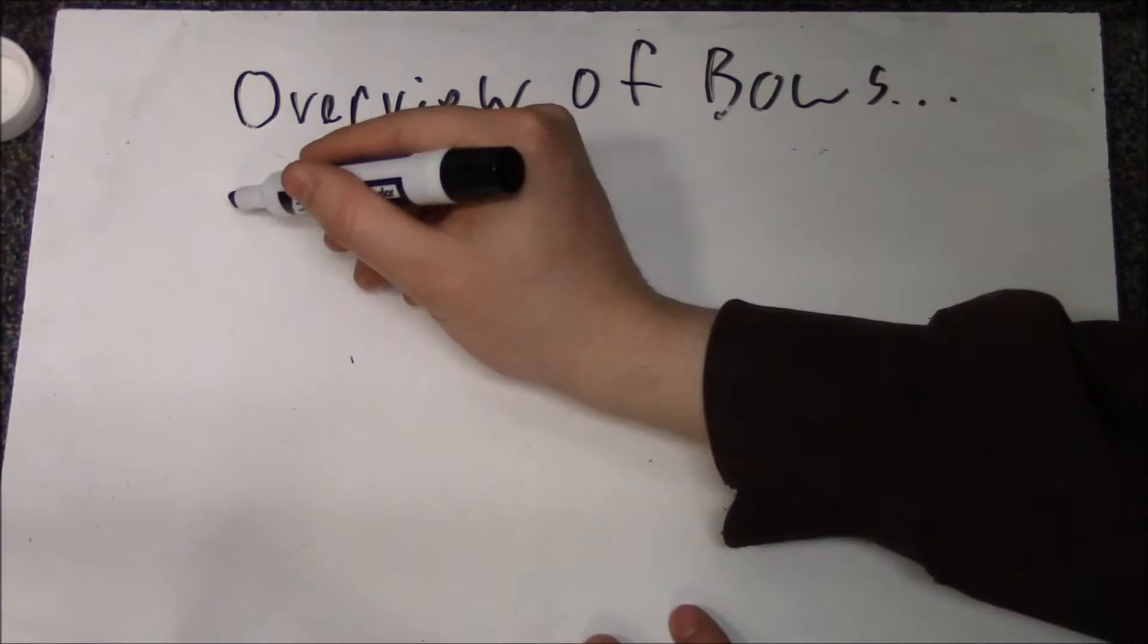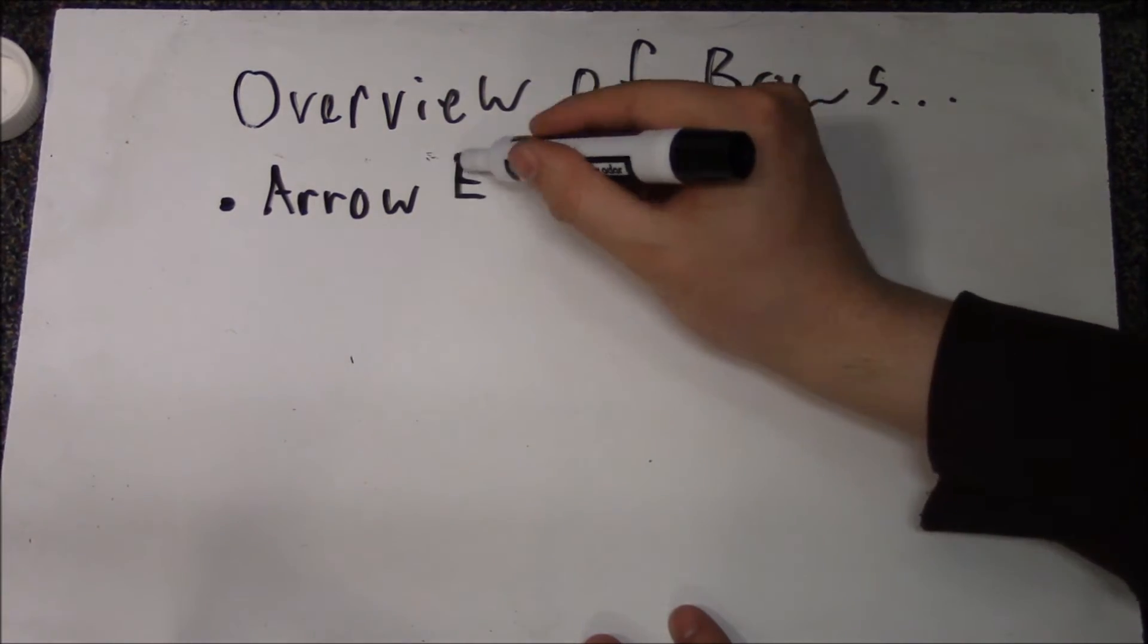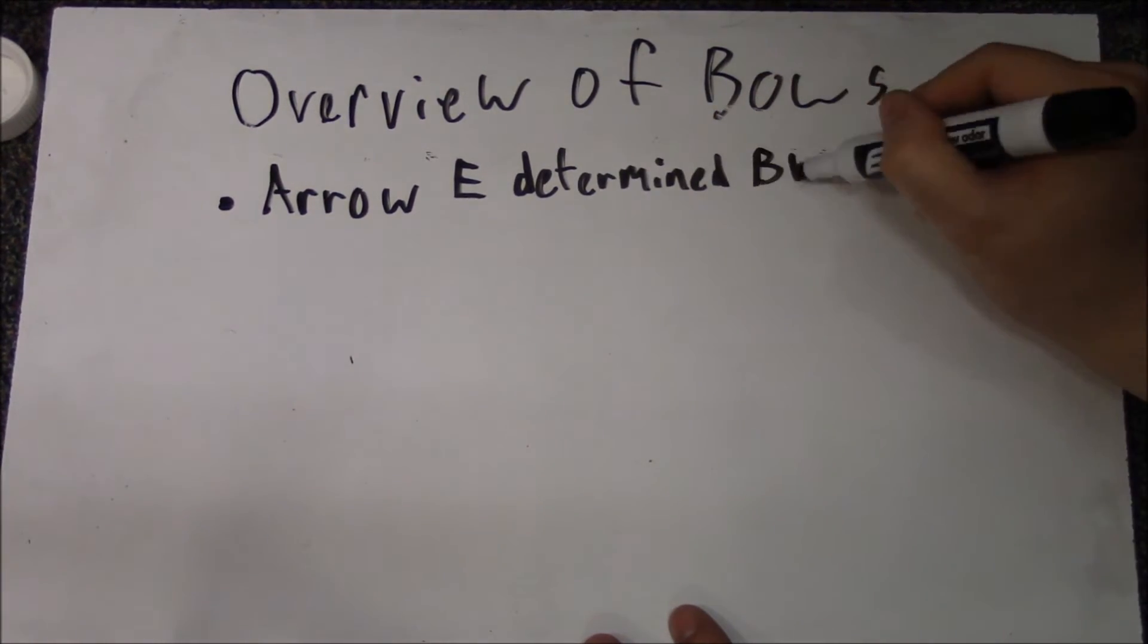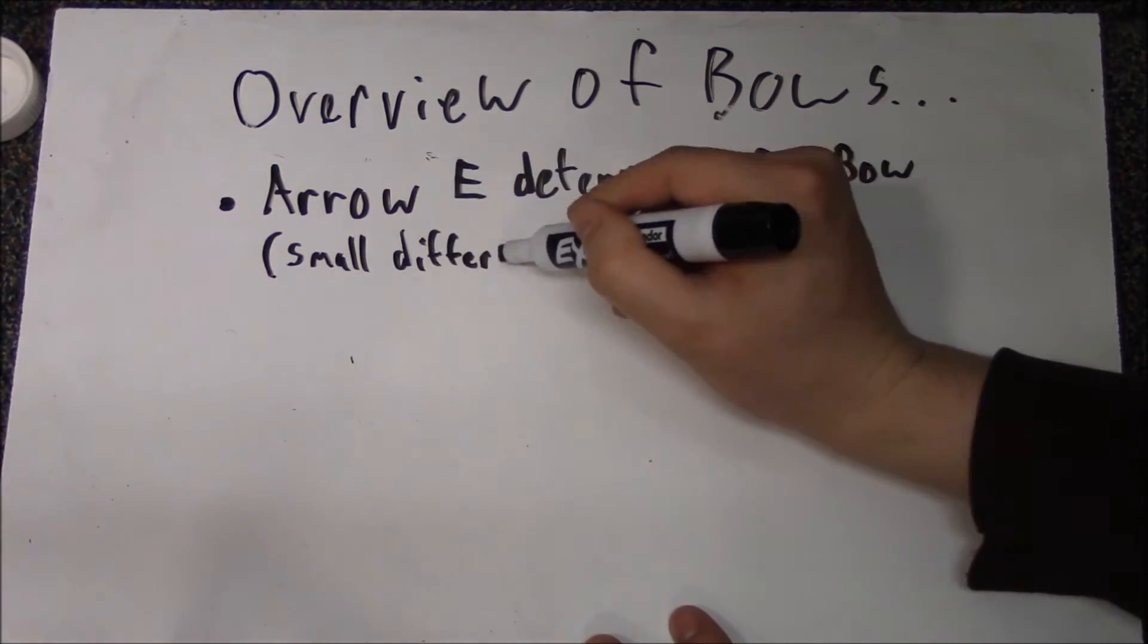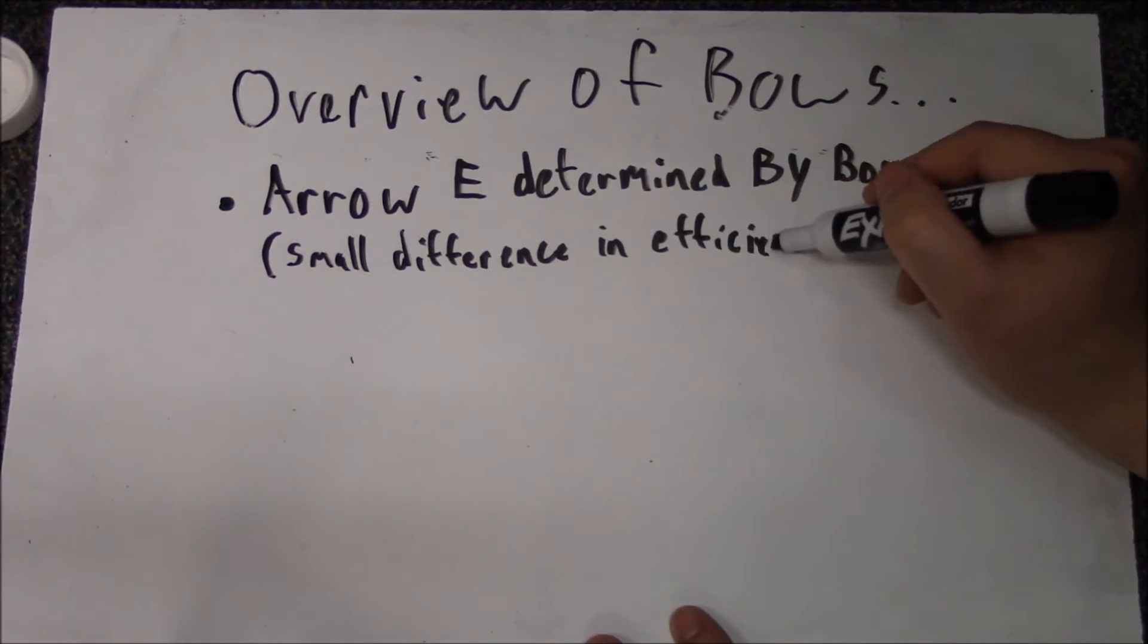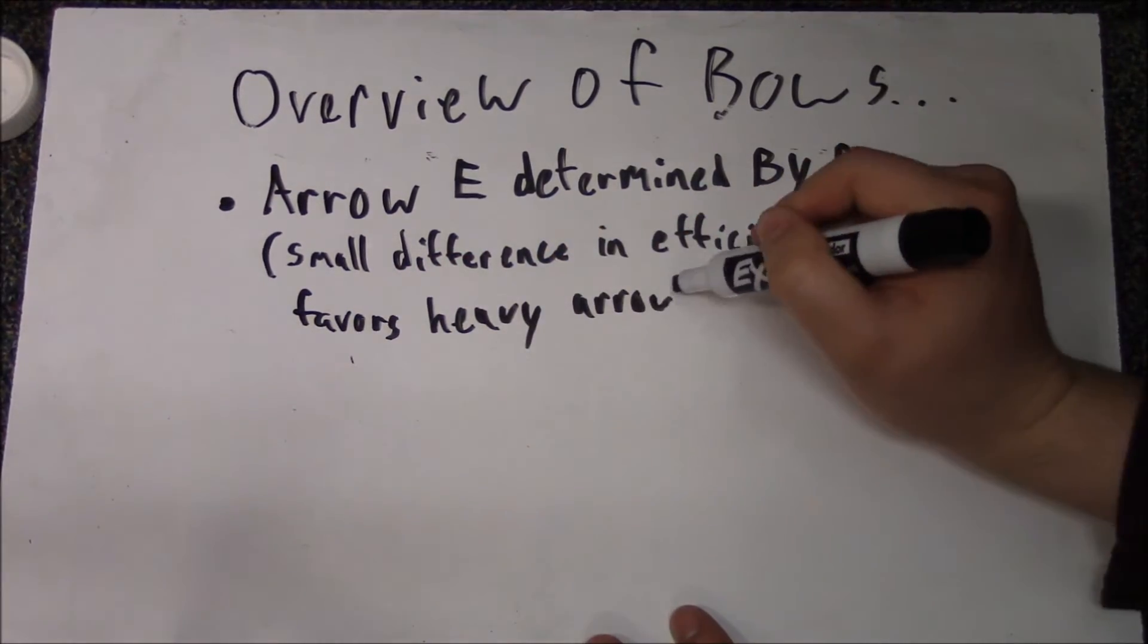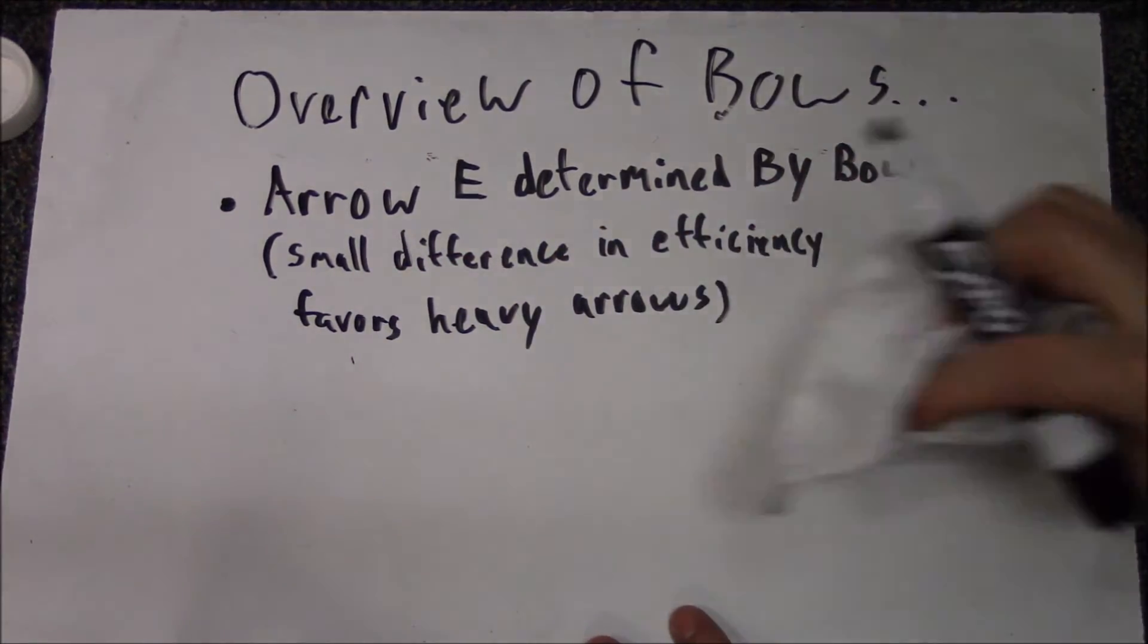So, what's the takeaway from this? Well, except in extreme cases, the energy of the arrows is mainly determined by the bow. Sure, energy transfer is more efficient for heavy arrows, but it doesn't change massively. This means that our model should give heavy arrows and light arrows the same starting energy.